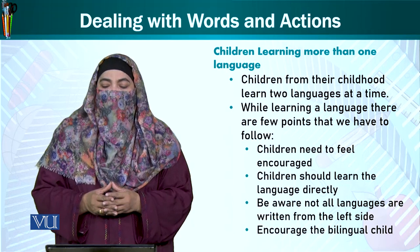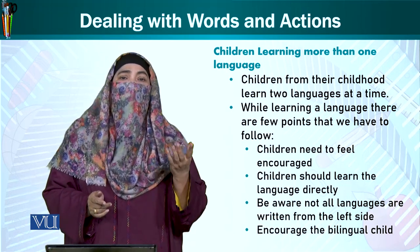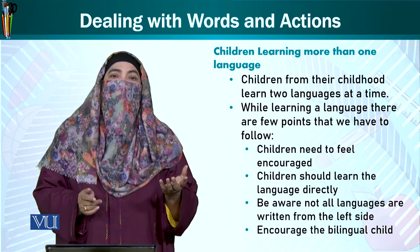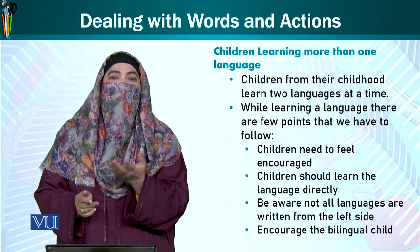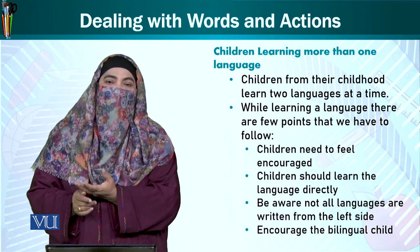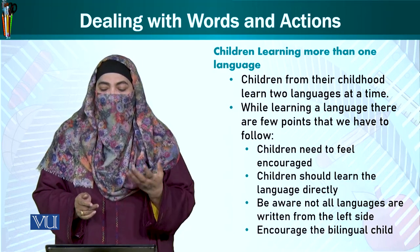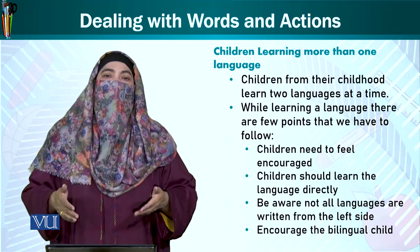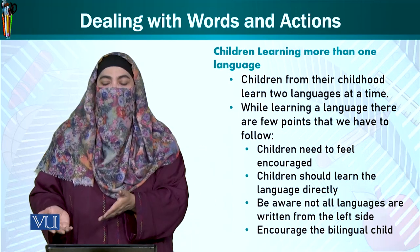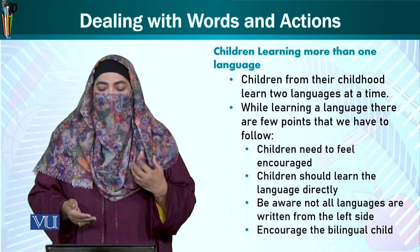Children learning more than one language — ہمارا یہ problem ہے کہ ہمیں تین یا چار زبانیں سیکھنی پڑتی ہیں: Arabic بھی، Urdu بھی، English بھی، اور اپنی علاقائی زبان بھی۔ So children from their childhood learn two languages at a time — ایک national language اور ایک ان کی اپنی۔